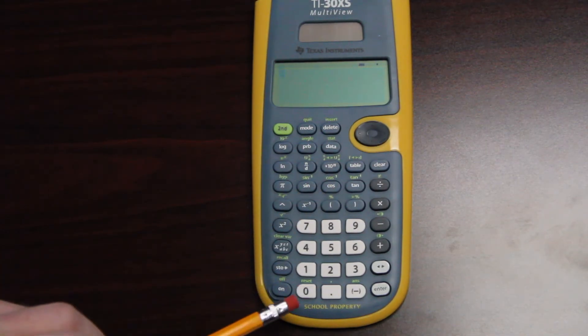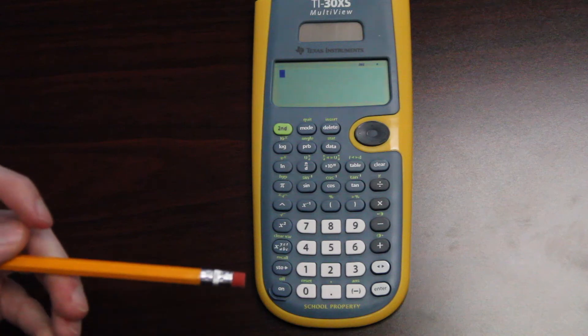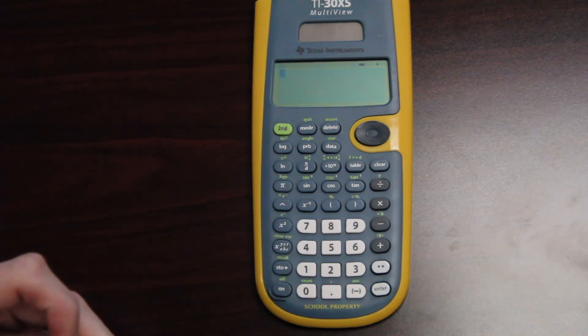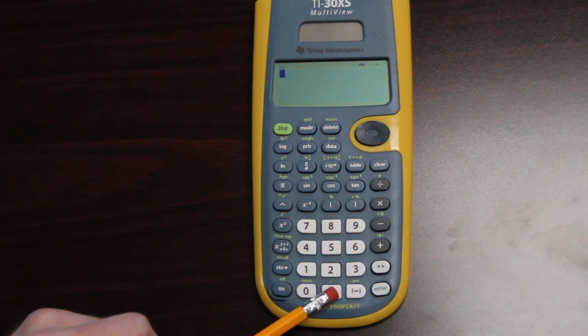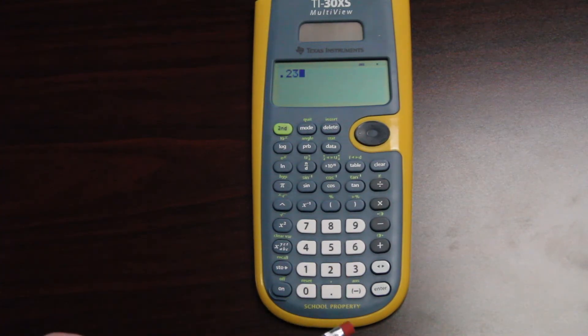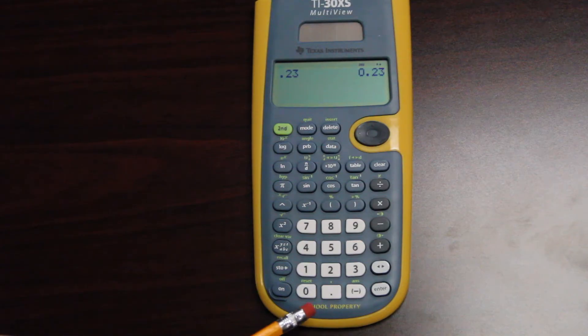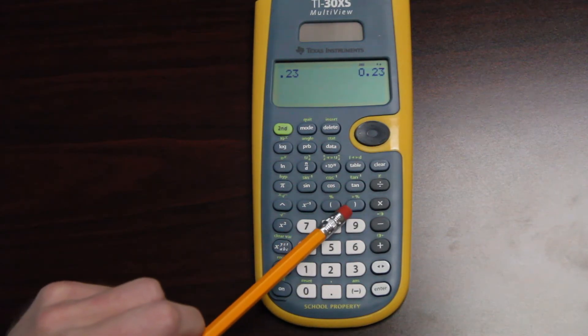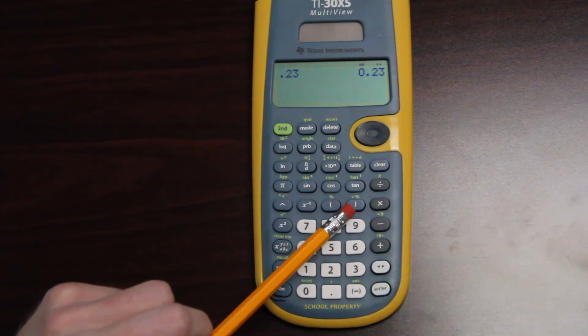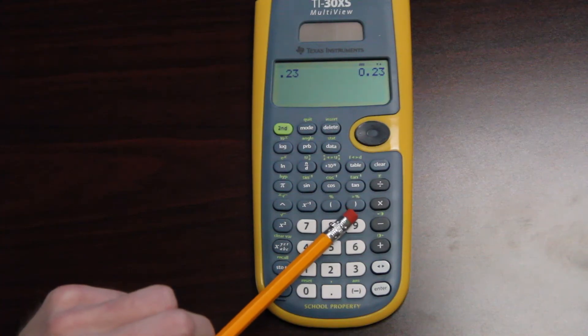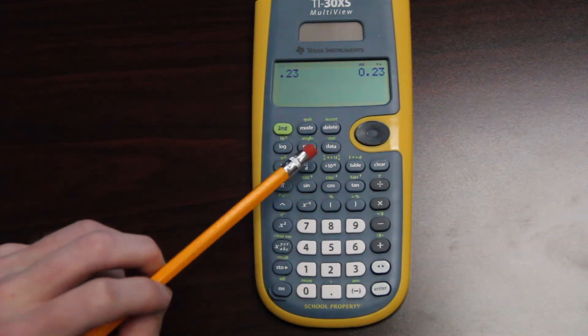Another thing you can do with the calculator is changing percents to decimals and decimals to percents. So let's say I had a decimal, they gave me the decimal 0.23, and I wanted to know what that was as a percent. The way I can do that is, in my green buttons here, I can see that there's an arrow to the percent sign, which means it's going to change that number to a percent.